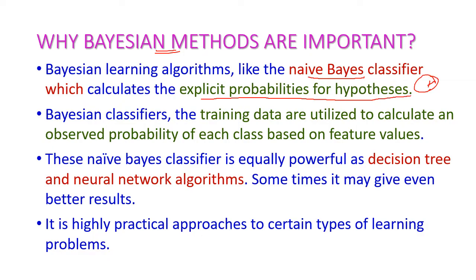In Bayesian methods, we have the Naive Bayes classifier, which is used to calculate explicit probabilities for a hypothesis. This is one of the important learning methods in machine learning. The training data are utilized to calculate the observed probability of each class based on feature value.